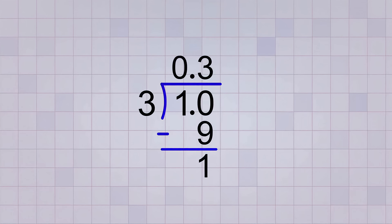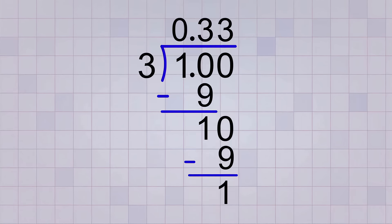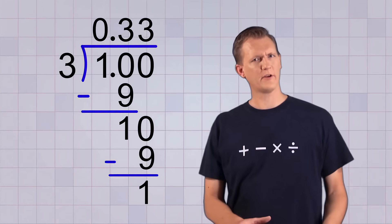Just like before, we don't want a remainder. So let's use another 0, so we can keep on dividing. And that gives us 10 divided by 3 again. Well, we know that 3 goes into 10 3 times, and leaves a remainder of 1. Huh! Still a remainder of 1.